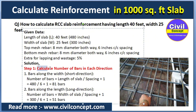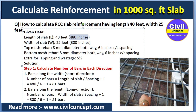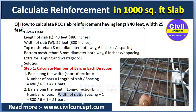Step 1: Calculate the number of bars in each direction. For bars along the width direction, the formula is: number of bars = length of slab divided by spacing, plus one. The length of the slab is 40 feet, which is 480 inches. Dividing 480 by 6 and adding 1 gives 81 bars. For bars along the long direction, number of bars = width divided by spacing plus one, giving 300 divided by 6 plus 1 = 51 bars.